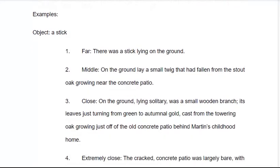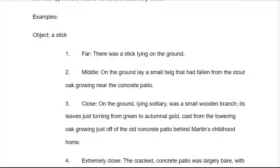Let's get even closer: 'On the ground, like solitary, was a small wooden branch, its leaves just turning from green to autumnal gold, cast from the towering oak growing just off the old concrete patio behind Martin's childhood home.' Now we're getting more sensory details — the coloring, the location. Why is it important? Maybe it has something to do with the childhood home. Is there a reason the stick is sitting by itself? The character is noticing this, and it's important to them.